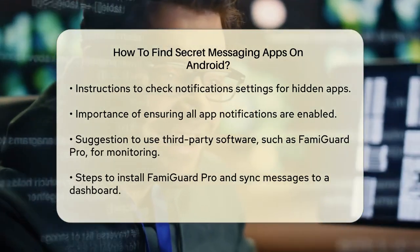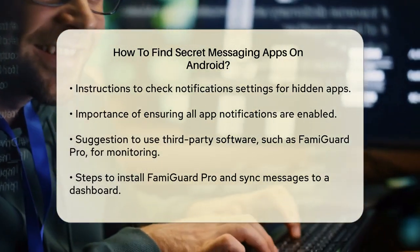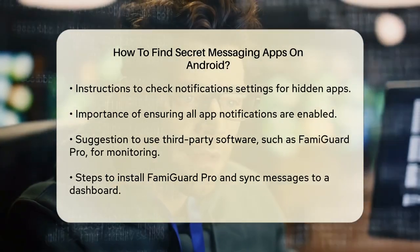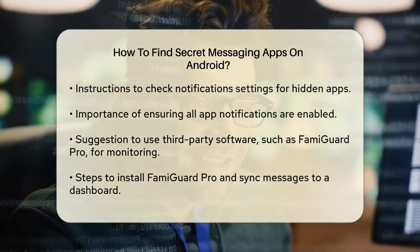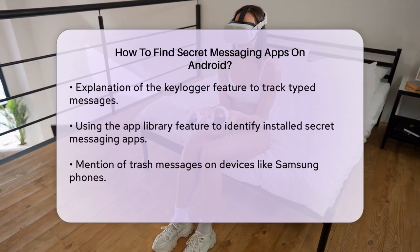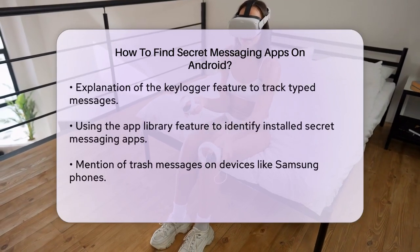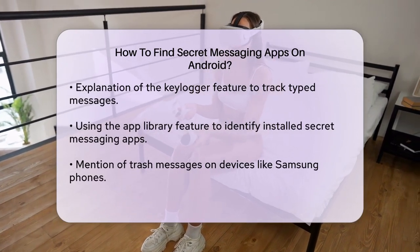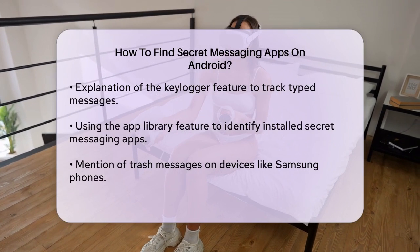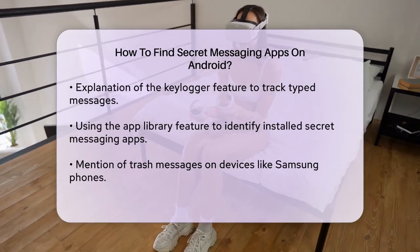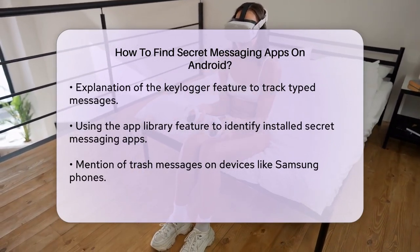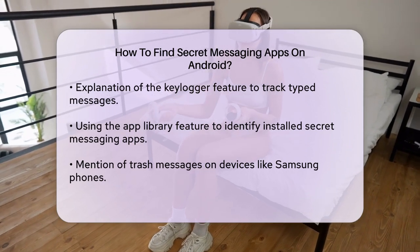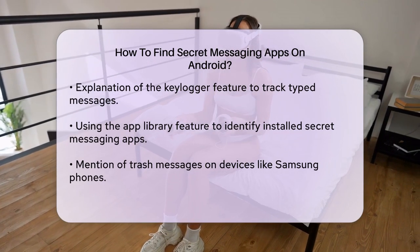Using third-party software: if you suspect that someone is using a secret messaging app, you can use a phone monitoring app like Famigard Pro. This app can record all messages, call logs, and even keystrokes from different apps. Install Famigard Pro on the target device. The app will sync all messages, including those from secret messaging apps, to a central dashboard. You can also use the keylogger feature to see what is being typed, and the app library feature to check if any secret messaging apps are installed on the device.